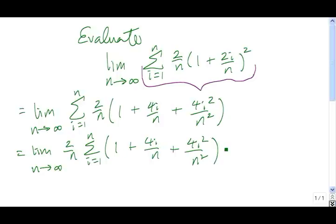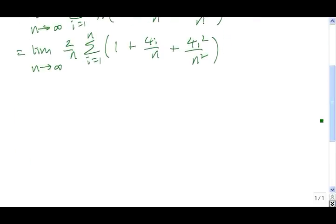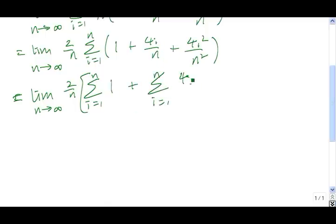Now we're going to rewrite this sum here using the property that if you're summing three different things together, it's the same as summing those three different things individually and adding the results. So we have the sum from 1 to n of 1 plus the sum from 1 to n of 4i over n plus the sum from 1 to n of 4i squared over n squared.